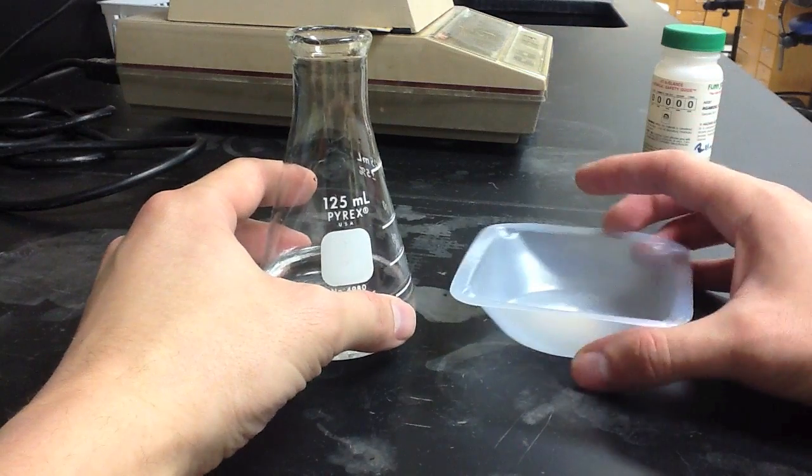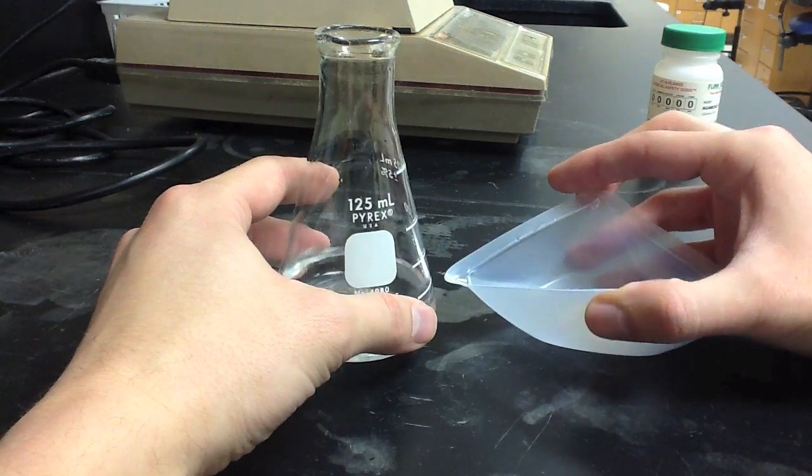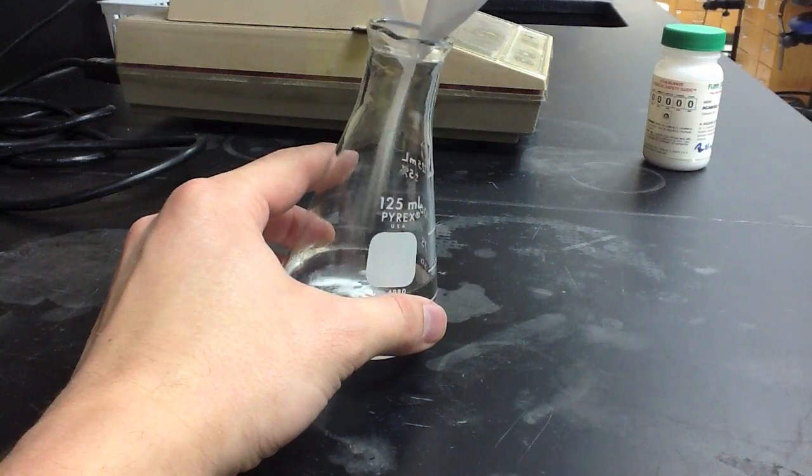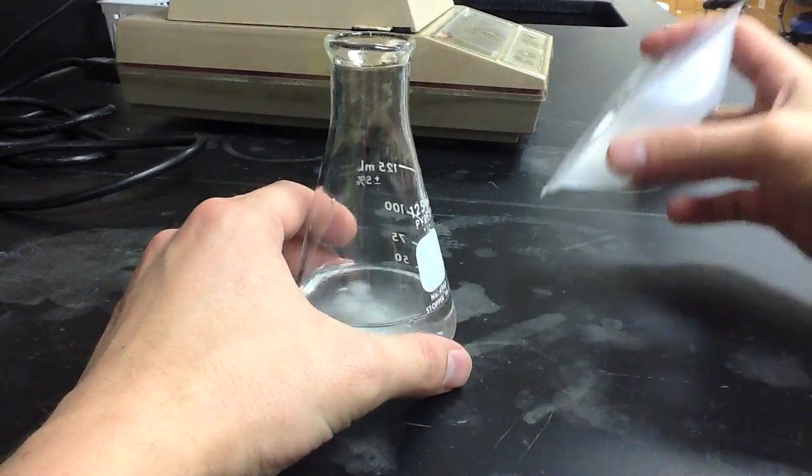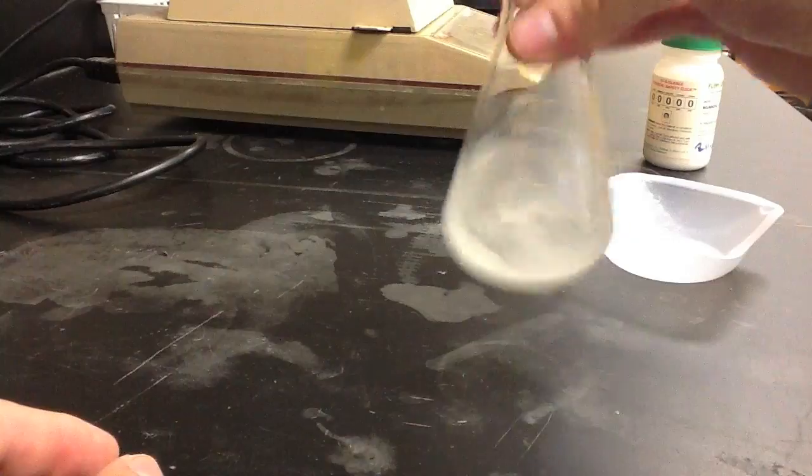To first make the agarose gel, we add powdered agarose to 1x TBE buffer. We'll then mix the solution as best we can and heat it to boiling in a microwave.